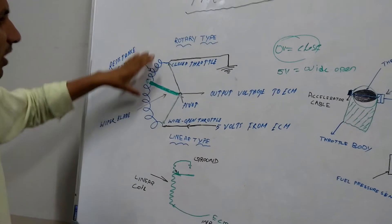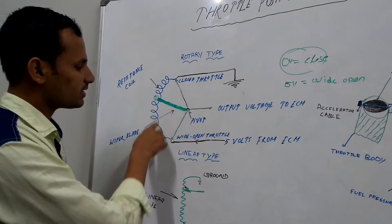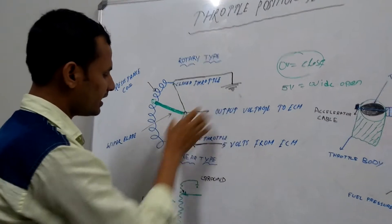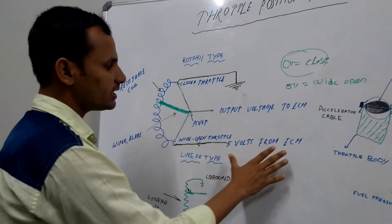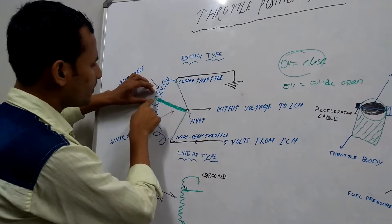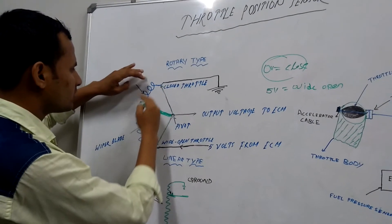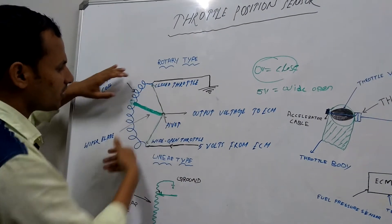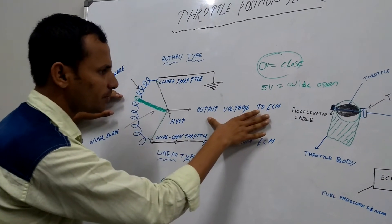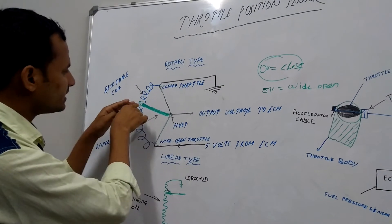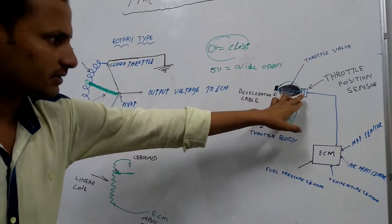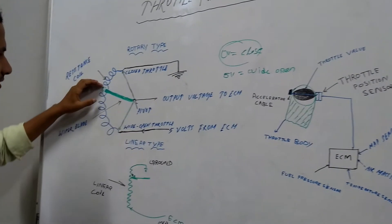In a rotary type, there is a half-round coil and the coil is connected to the ground, and the other end is connected to the ECM. The ECM supplies 5 volts to the coil, and a wiper blade always contacts with the coil or slides above the coil, which is connected to the output supply of the ECM. And it is mounted on the throttle valve shaft.